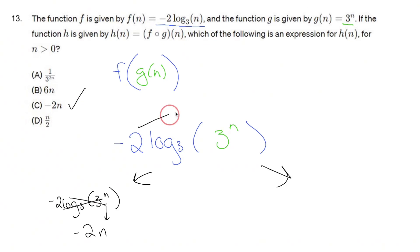Another way of looking at it is you could say I can bring that negative 2 up here and so I have log base 3 of 3 to the n to the second power, negative second power. Multiply these two and that gives you log base 3 of 3 to the negative 2n.